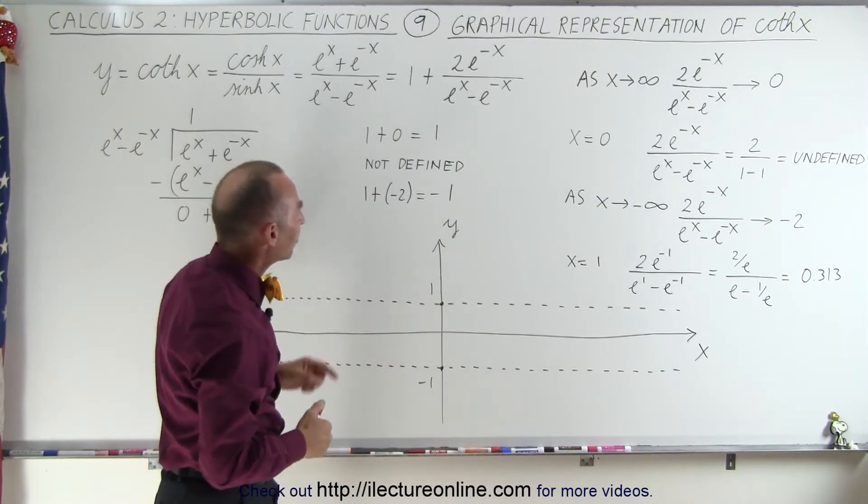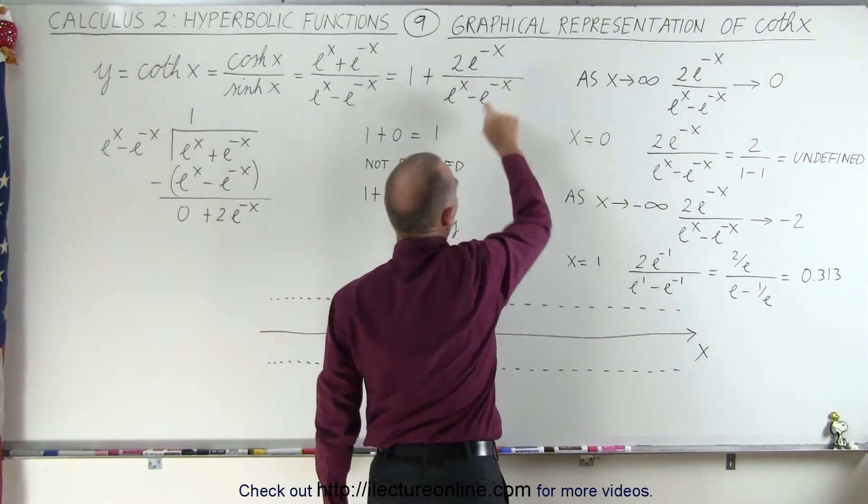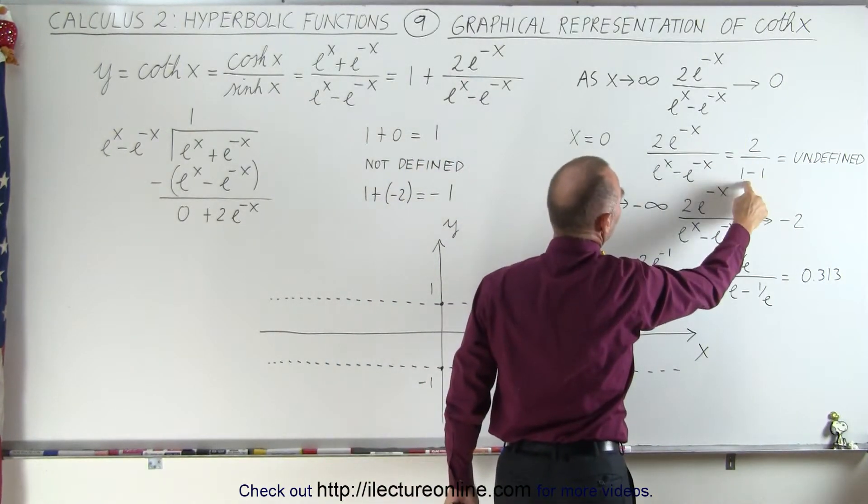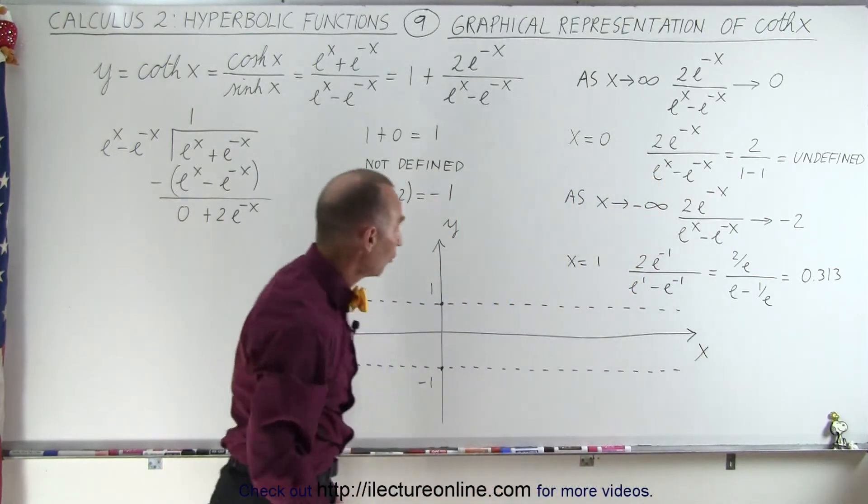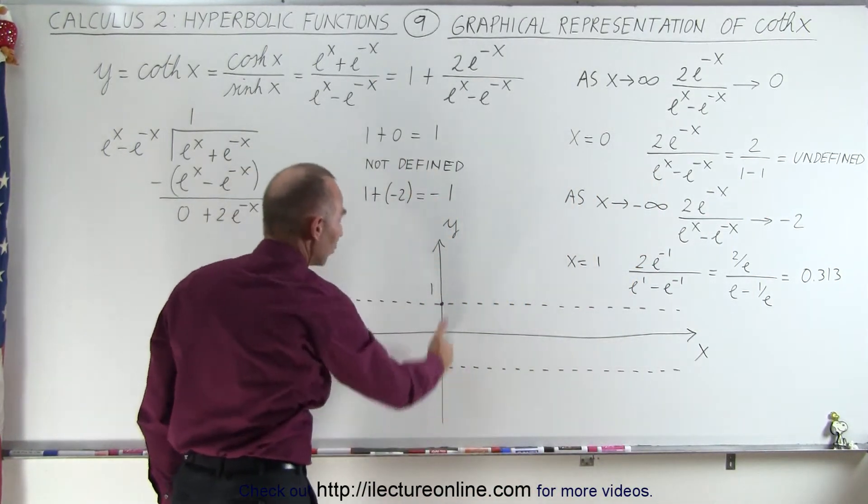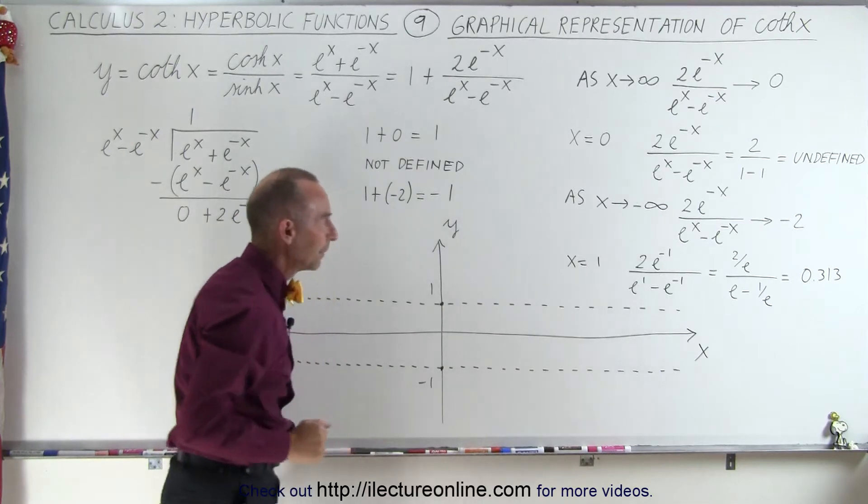When x equals 0, notice that when we plug in 0 for x, we get 2 divided by 1 minus 1, which is 2 divided by 0, so it's undefined. We have a vertical asymptote at x equals 0.